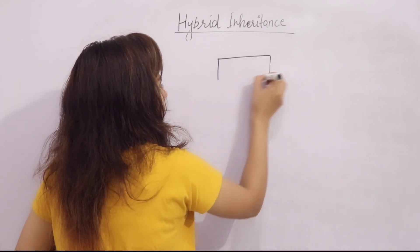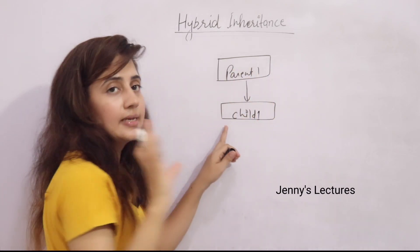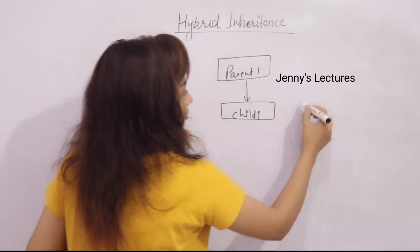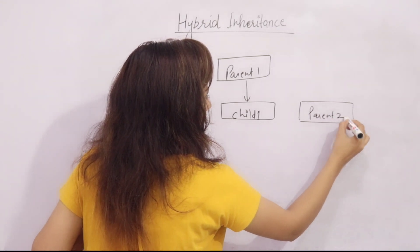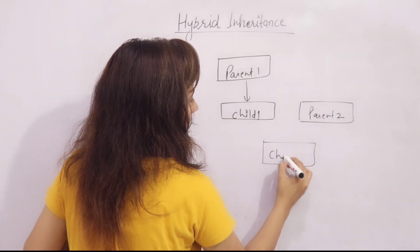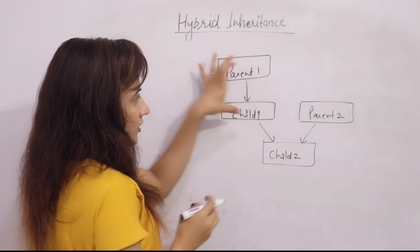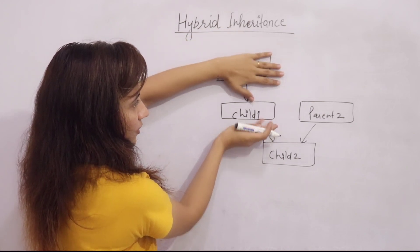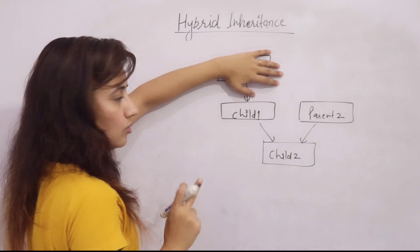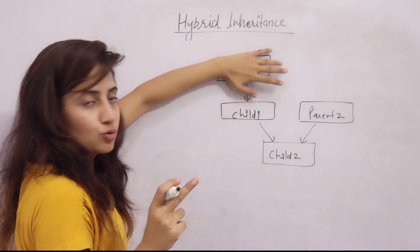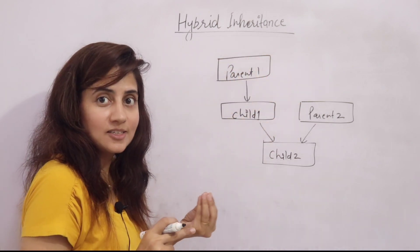For example, consider Parent One and Child One — that is single inheritance. Now if we mix this with Parent Two, Child One, and Child Two: looking at that part, we have more than one parent and only one child, so that is multiple inheritance. So this combination of single plus multiple inheritance is what we call hybrid inheritance.